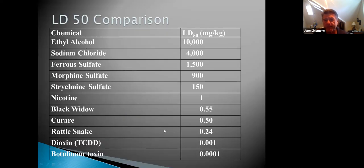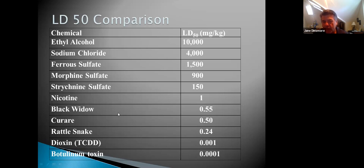Here are some LD50 comparisons in milligrams per kilogram. Alcohol is about 10,000. Sodium chloride — plain salt — is next. Ferrous sulfate is iron. Morphine is middle of the road at 900. Strychnine is lower. Nicotine is quite low — so whether you chew or smoke, it's a serious toxin. Black widow venom is low. Curare — what succinylcholine was derived from — rattlesnake venom, dioxin, and botulism is at the extreme end, likely the most potent toxin in the world.